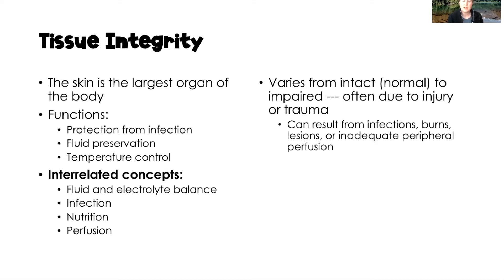Tissue integrity varies from completely intact — which would be normal tissue integrity — to impaired. Impairment is often due to an injury or trauma of some sort. It can also result from an infection, a burn, a lesion on the skin, or just from inadequate peripheral perfusion that causes tissue damage.